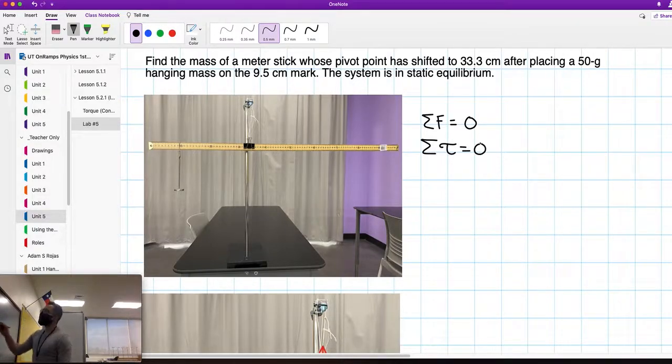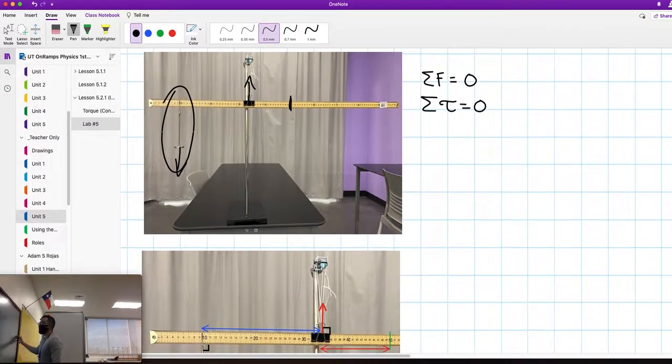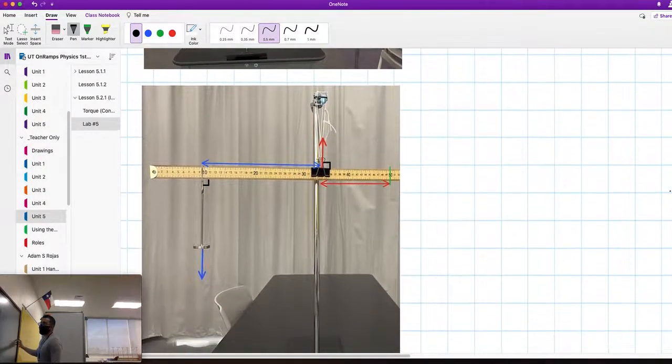This mass over here will apply a torque to the system. As it's balanced, we have the force of the pivot point and this force. The center mass for this meter stick without any mass on it was at 50 centimeters. That is important. Don't forget the center mass is an average, and that point is very important.